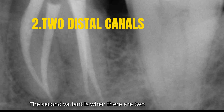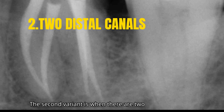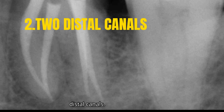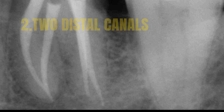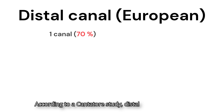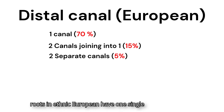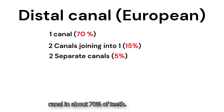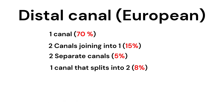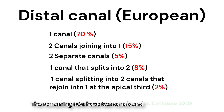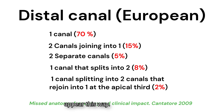The second variant is when there are two distal canals. According to a study, distal roots in ethnic Europeans have one single canal in about 70 percent of teeth. The remaining 30 percent have two canals.